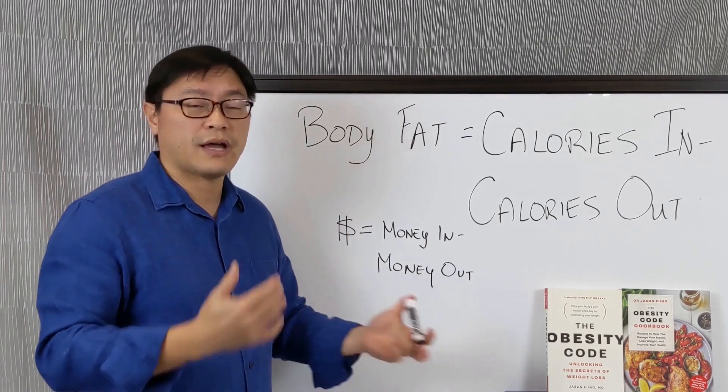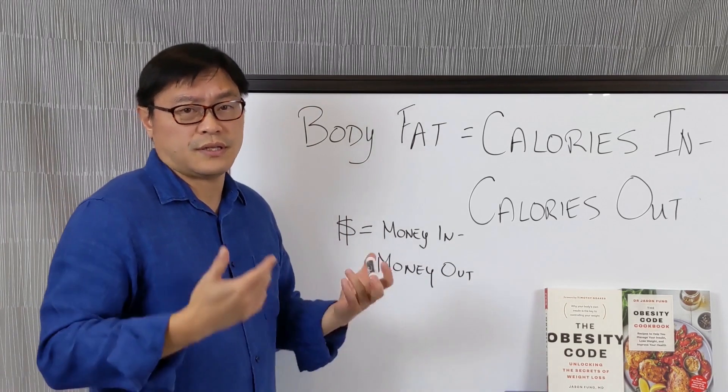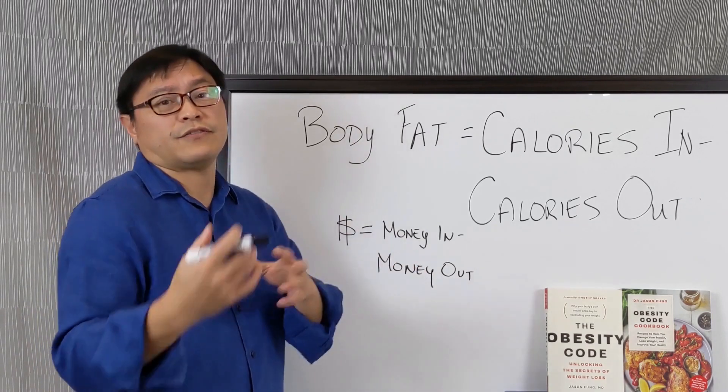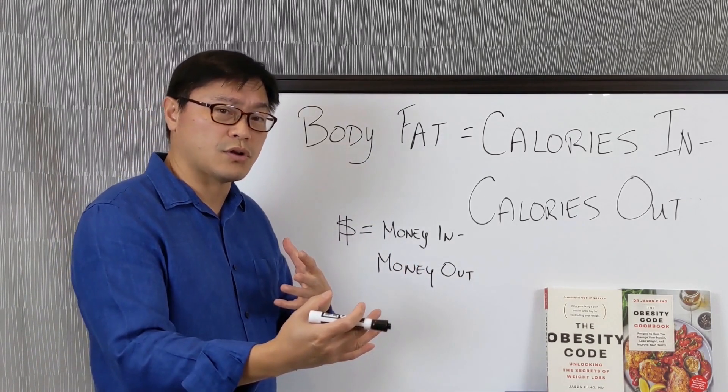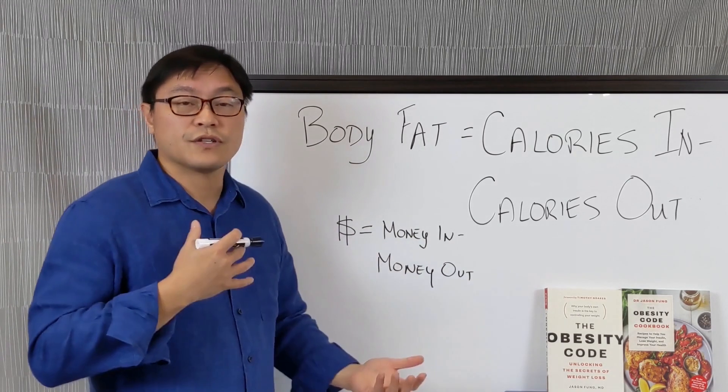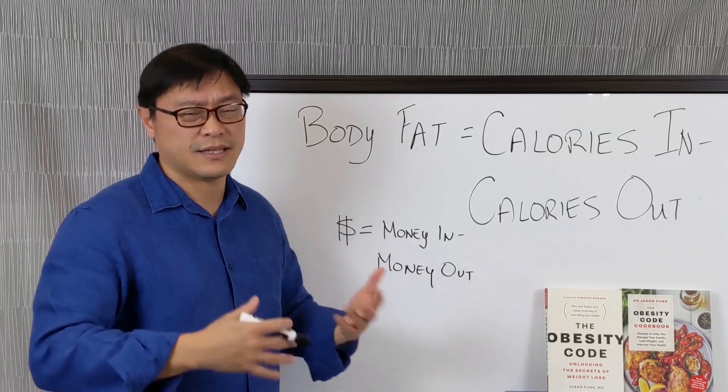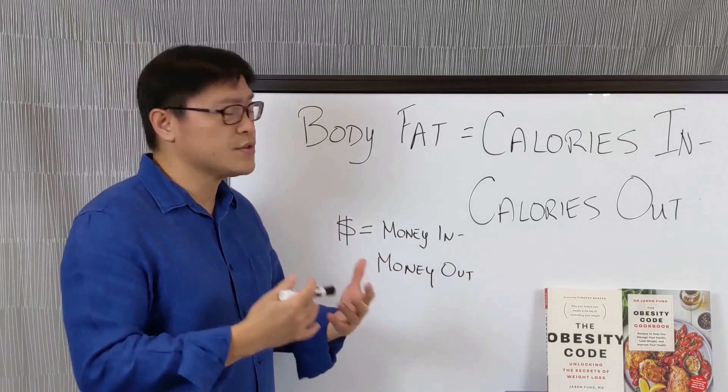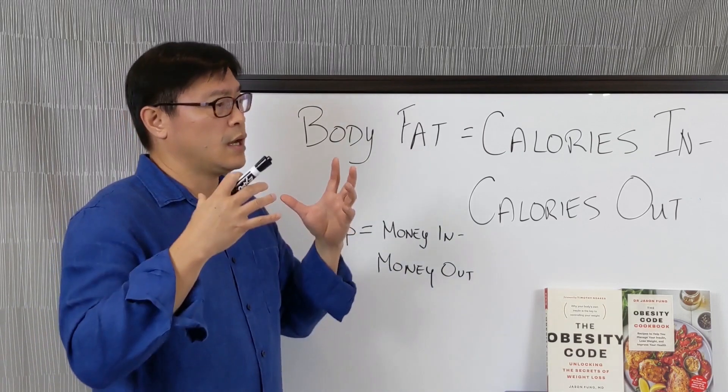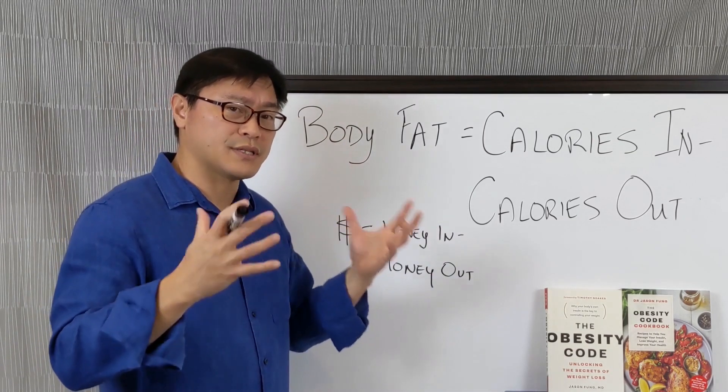So then you say, all I have to do is increase the amount of money that comes in. But if making $120,000 makes you spend $120,000, then there's no difference in terms of the money in your bank. At the end of the day, it's the same. And this is the big problem with this whole calories in, calories out, sort of a calorie is a calorie thinking.